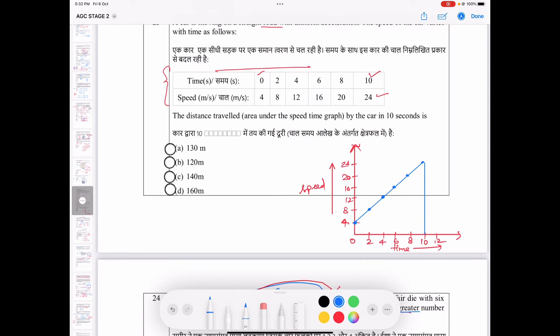Now students, you can see that the area under the speed time graph, which you have made, this shape you have. And students, this line and this line, both parallel, it means that it is a trapezium shape. So we will find out this area and you will get the distance travelled in 10 seconds.